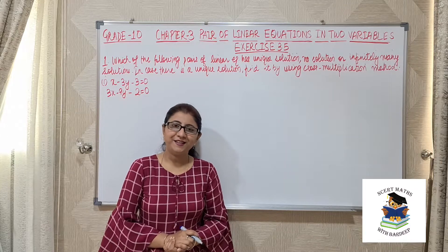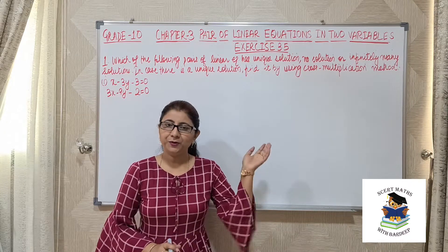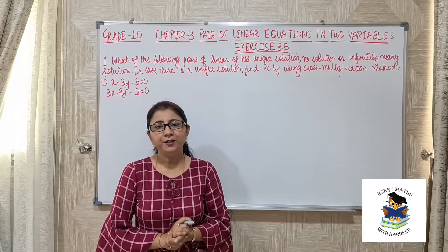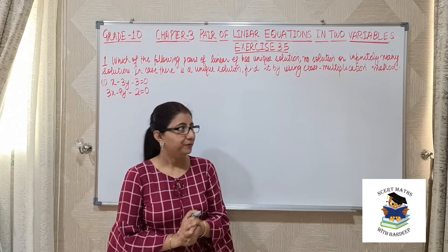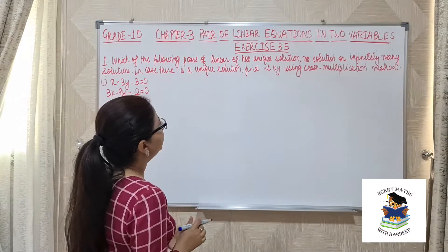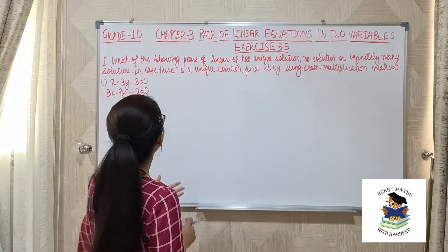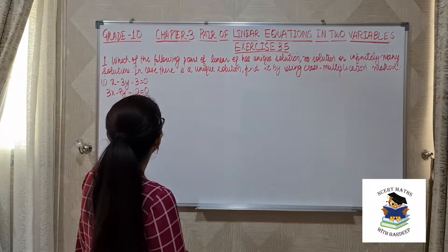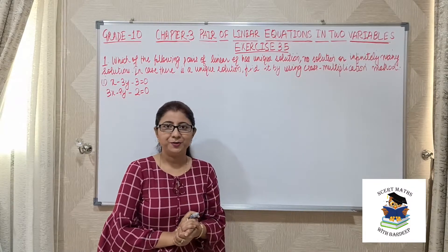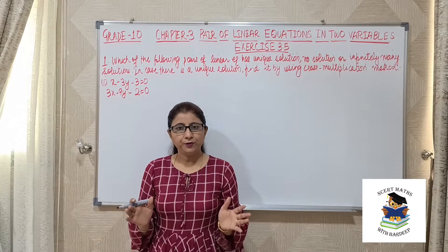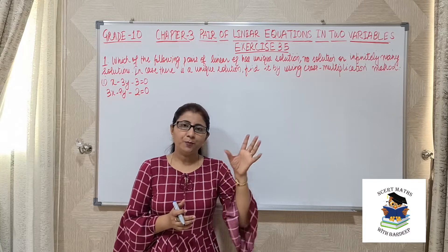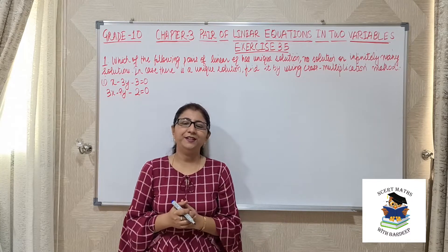Hello everyone, welcome back to my channel NCRT Maths with Vardir. Today we are going to start exercise number 3.5 of chapter 5, that is Pair of Linear Equations in Two Variables of grade 10. The first question asks which of the following pairs of linear equations has a unique solution, no solution, or infinitely many solutions. In case there is a unique solution, find it by using the cross multiplication method. We have to use two different concepts: the graphical method of solving pairs of linear equations, which I already explained in the introduction video.